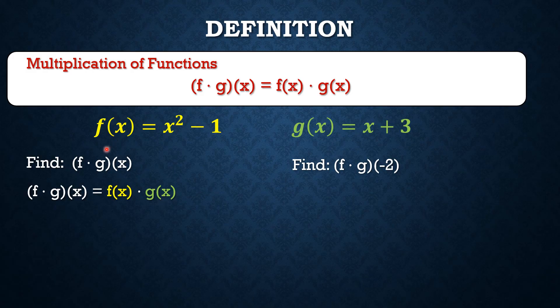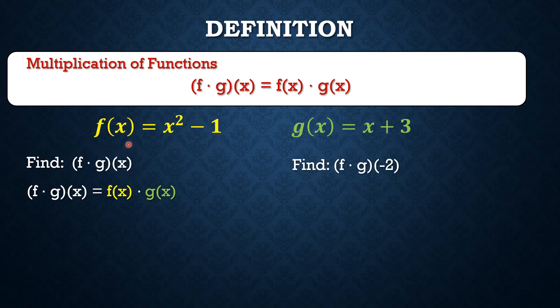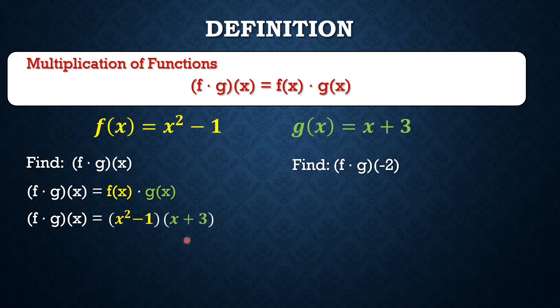And so, we're going to replace f(x) with x² - 1 and g(x) with x + 3. And so, we have (x² - 1) times (x + 3).